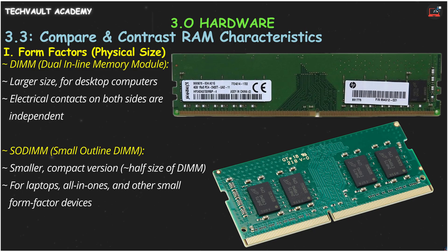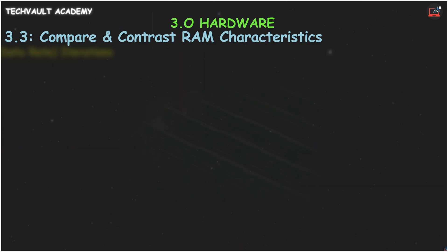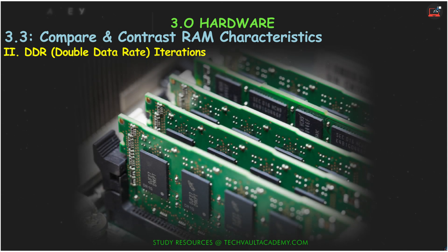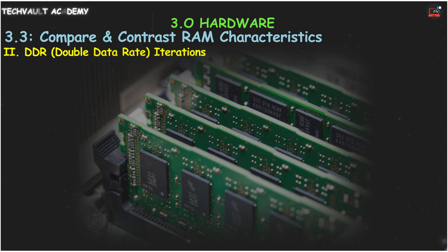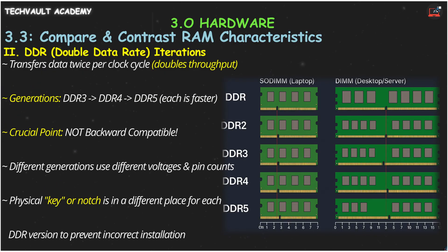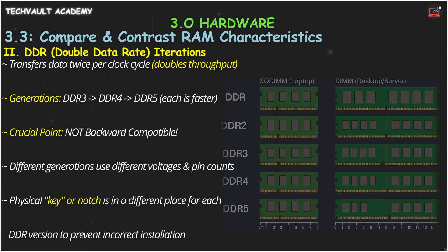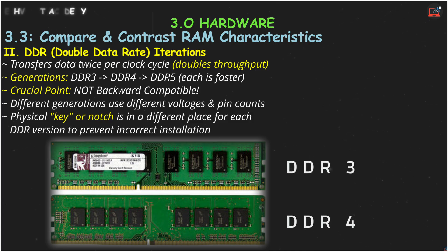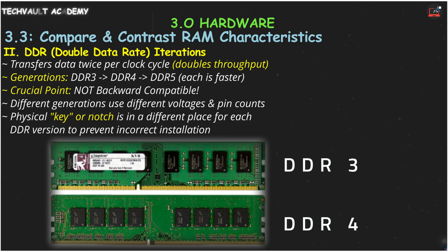Next up, the technology that makes modern RAM so fast: DDR, or Double Data Rate. DDR memory cleverly transfers data twice per clock cycle, effectively doubling the data throughput compared to older memory. It has evolved through generations — DDR3, DDR4, and now DDR5 — each one faster than the last. But here's a crucial point for the A+ exam: DDR generations are not backward compatible. A DDR4 module will not fit in a DDR3 slot. To prevent mistakes, each generation has a physical key or notch in a different location. If the notch doesn't line up, it's the wrong type.